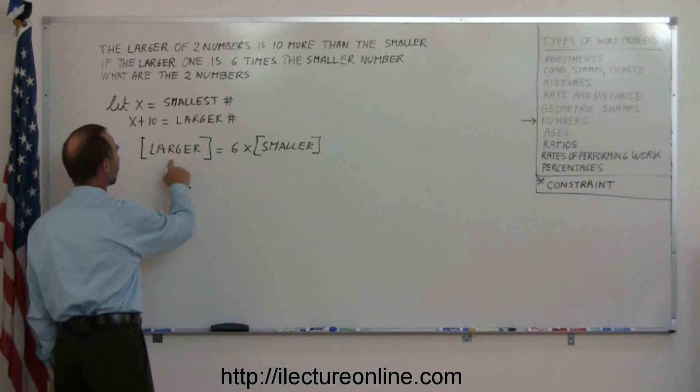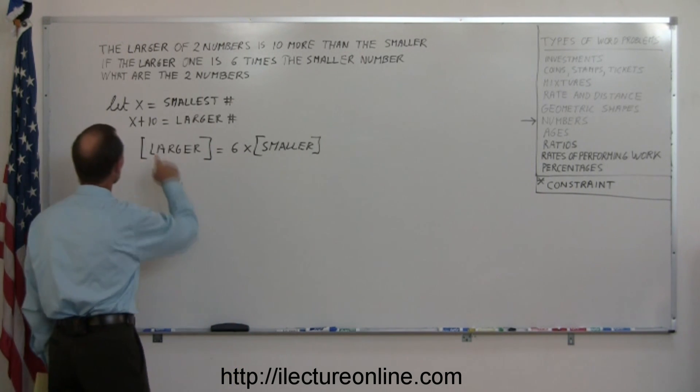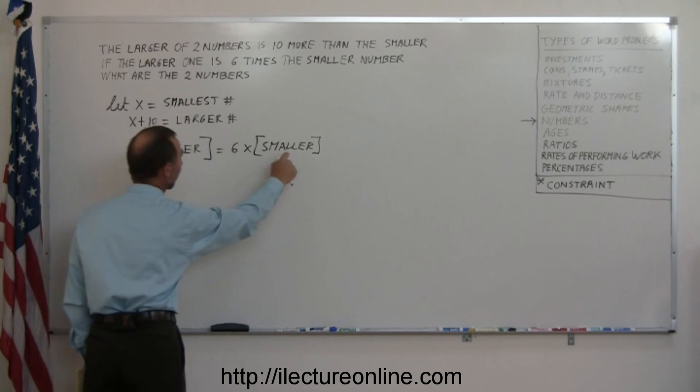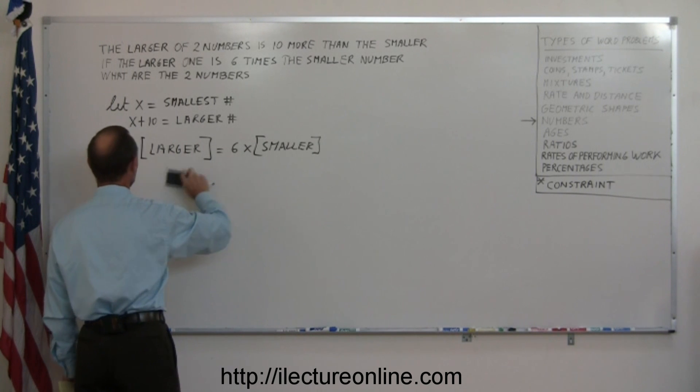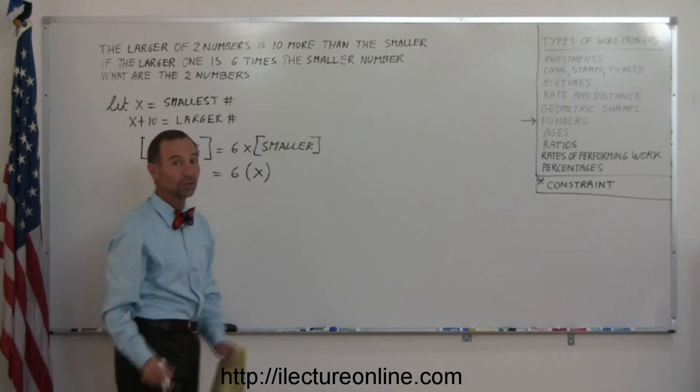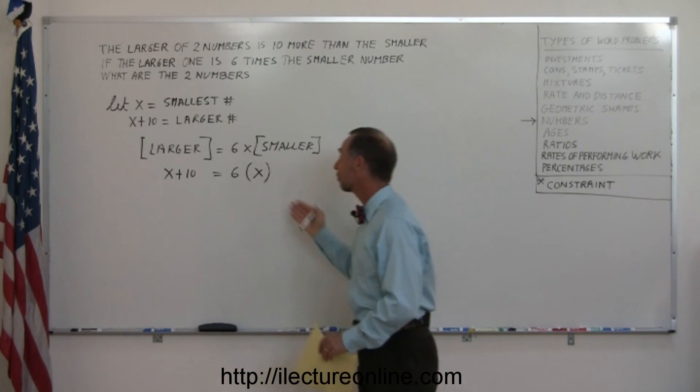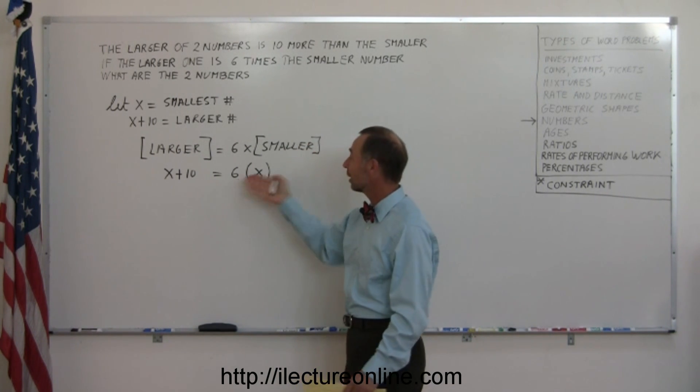Now we simply replace what the larger and smaller numbers are in terms of the way you define it with the variable x. So if x is the smallest number, we're going to put x in there. If x plus 10 is the larger number, we're going to put that in there. So x plus 10, which represents the larger number, is six times the smaller number, which is x. There's the constraint that helps us figure out how to write the problem into an equation. Now all we have to do is simply solve this.